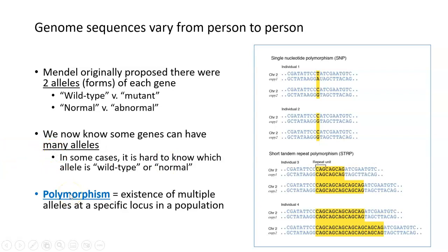This brings us to the idea of what a polymorphism is. A polymorphism is the existence of multiple alleles at a specific locus or location in the genome in a population. So when there are multiple alleles present within a population for a specific gene, that's what we refer to as a polymorphism — multiple forms of one gene that exist in decent amounts within a population.